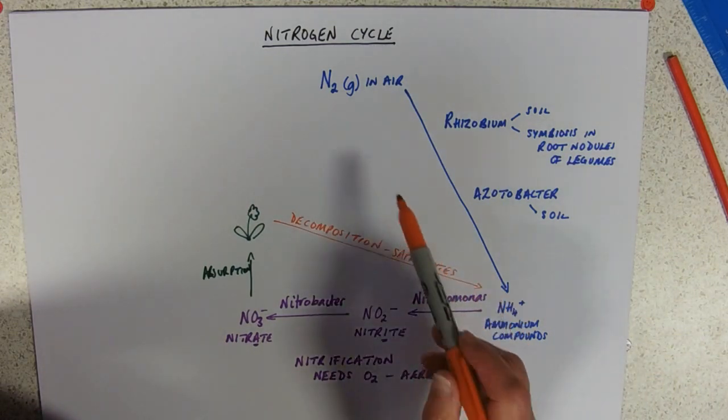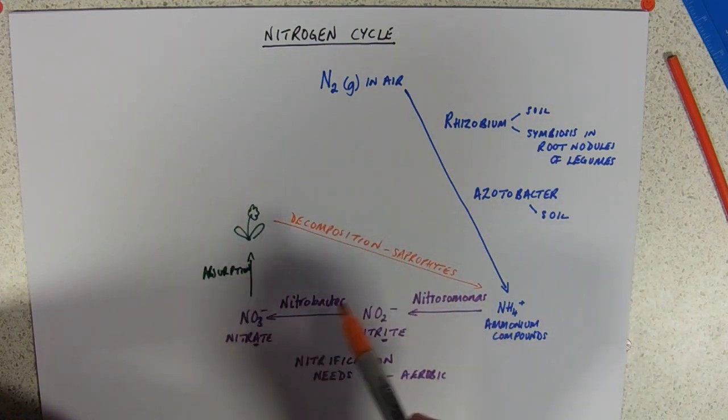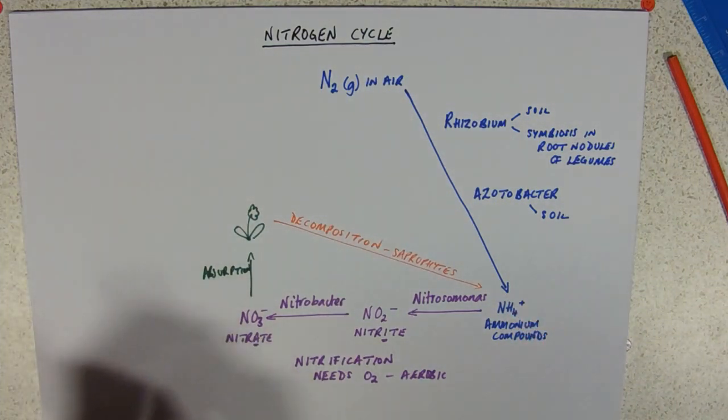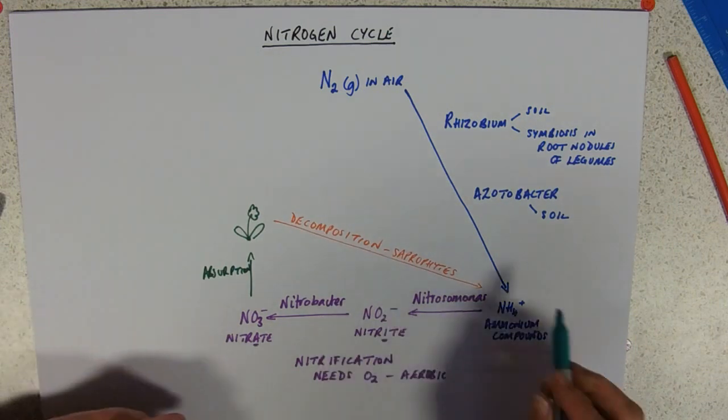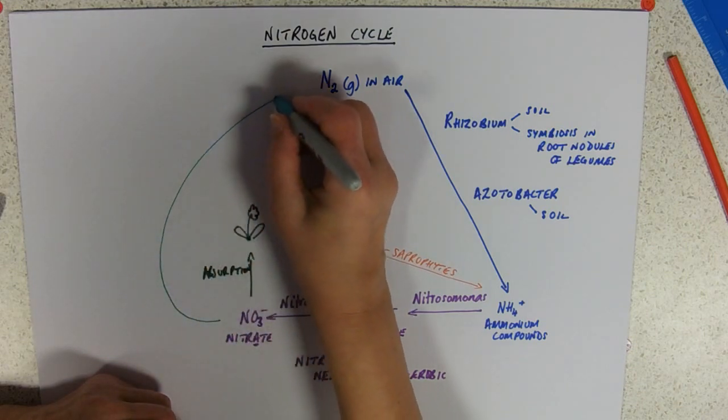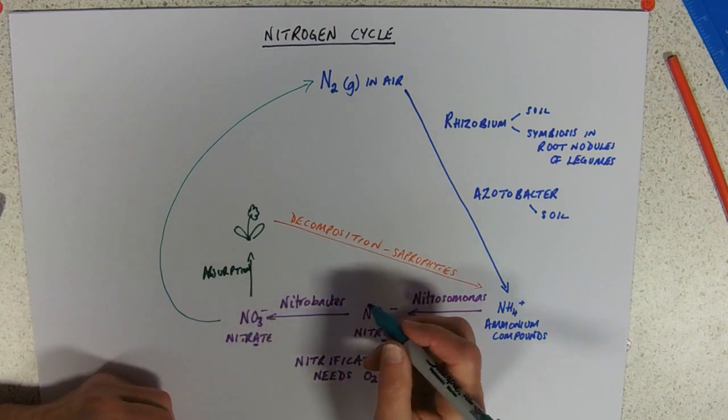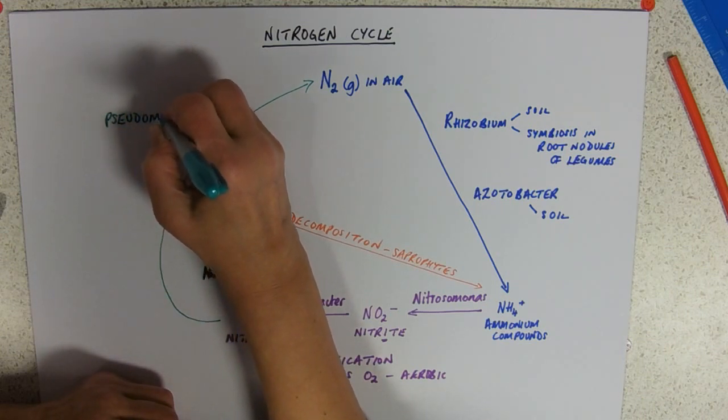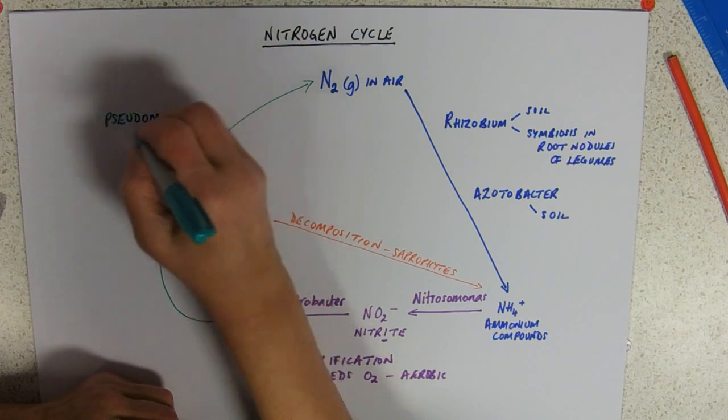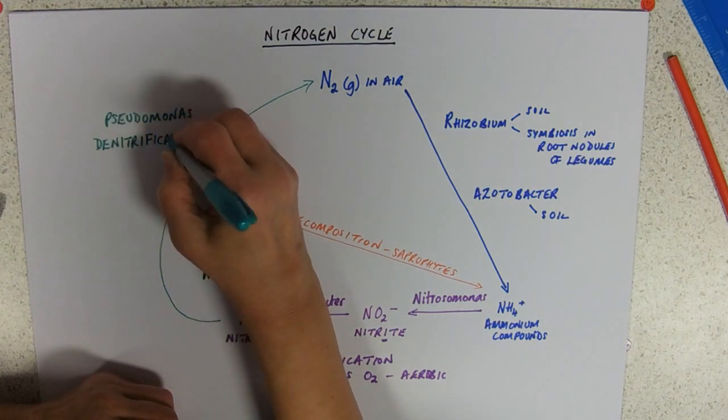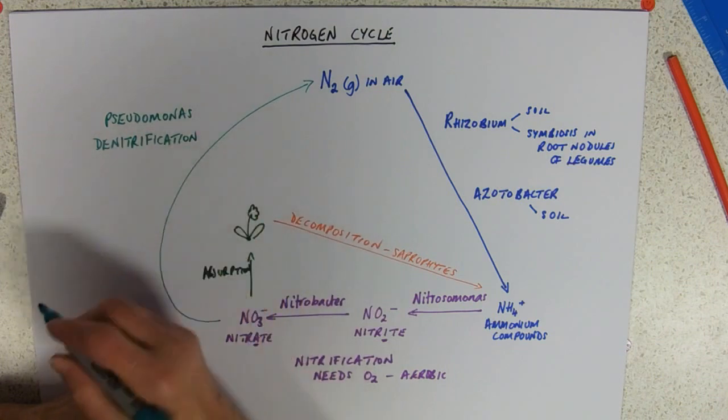Now, obviously, if it was just that bit, it could go on indefinitely. But we've got this taking nitrogen gas out of the air. So we need another process to put some nitrogen gas back in or we're going to run out. And so we also have the opposite of this process where we're taking nitrate out of the soil and putting it back into the air. Again, we need to know the name of the bacteria. This is Pseudomonas. This is a denitrifier. The process is denitrification. Bacteria are called denitrifiers.